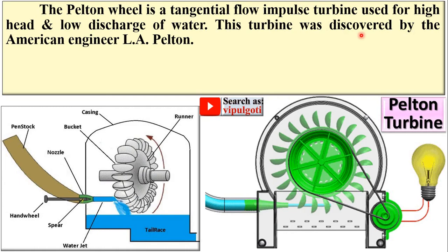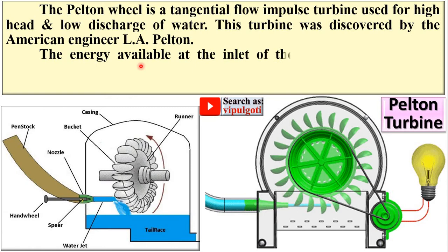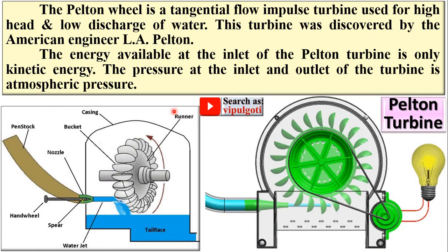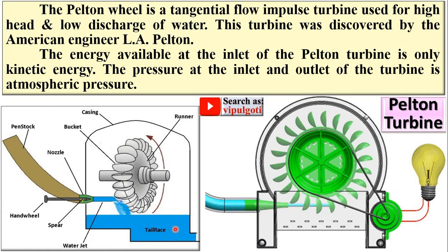This turbine was discovered by American engineer L.A. Pelton. The energy available at the inlet of the Pelton turbine is only kinetic energy, meaning the pressure at the inlet and outlet of the turbine is atmospheric pressure.